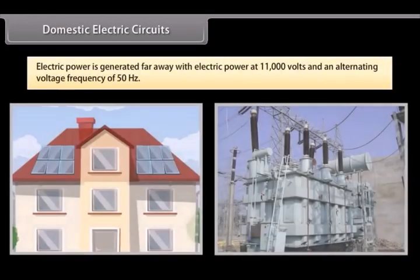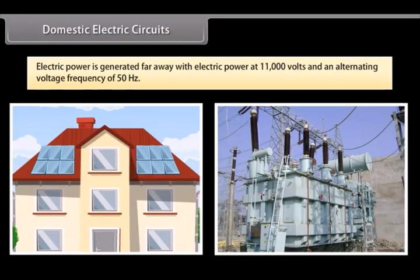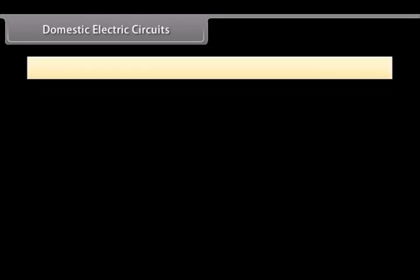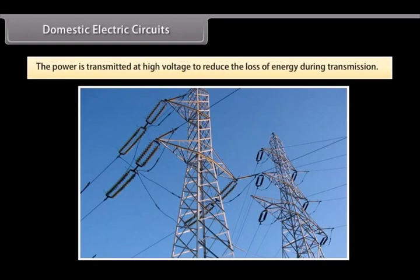Domestic electrical circuits. Electric power is generated far away from the places it is consumed. At the generating station the electric power is generated at 11,000 volts with an alternating voltage frequency of 50 hertz. The power is transmitted to the places of consumption at high voltage to reduce the loss of energy during transmission.